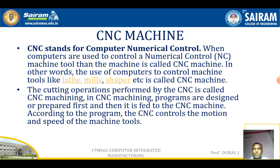First we will see the evolution of NC machines. In the 1940s, NC machines were found. Initially, they were used to manufacture aeroplane wings, especially in the aerofoil shapes.